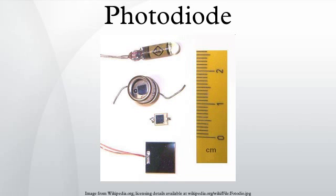Many diodes designed for use specifically as a photodiode use a PIN junction rather than a PN junction to increase the speed of response. A photodiode is designed to operate in reverse bias.